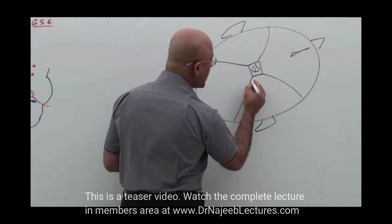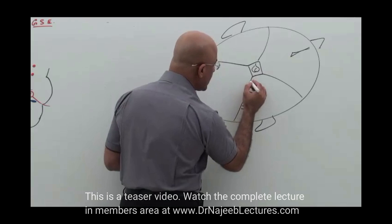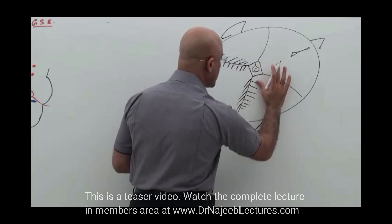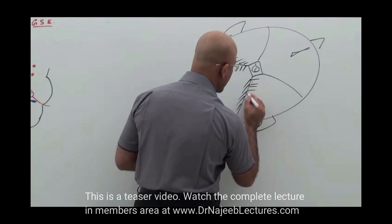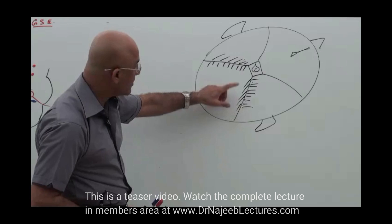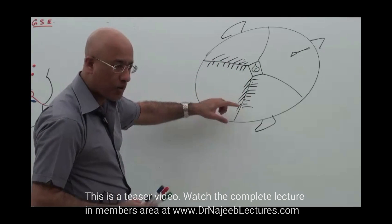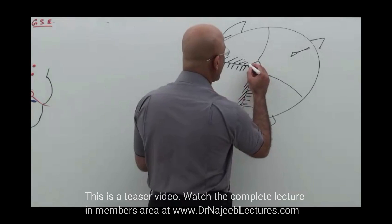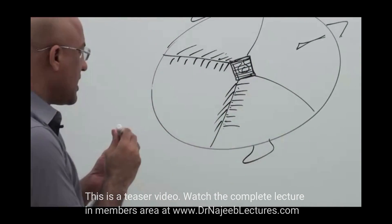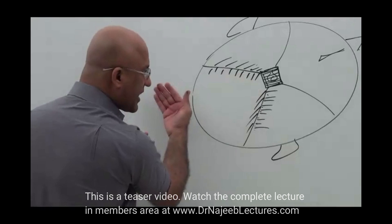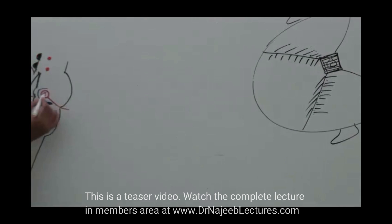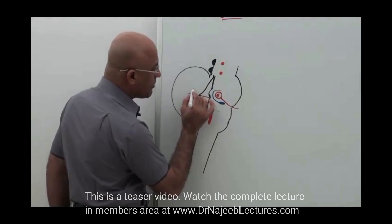In the middle cranial fossa, what is this bone? The petrous part of the temporal bone. And this bone is the body of the sphenoid. Now if I make a cut section of the pons — a section passing through the sixth nucleus — here is your pons, here is your fourth ventricle, and from the pons, this nerve is going out.